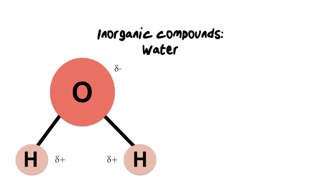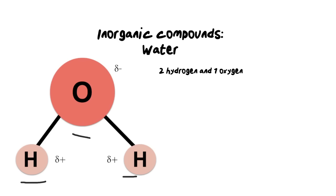The first and most important inorganic compound we need to know is water. It's essential for life — we could survive weeks without food, but without water we would die within a few days. Water has a very simple structure: two hydrogen atoms attached to one oxygen atom. Water is a polar molecule, meaning one side is slightly negatively charged while the other side is slightly positively charged. The molecules of water form hydrogen bonds with one another, and these intermolecular forces are responsible for the cohesion forces between the molecules.